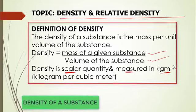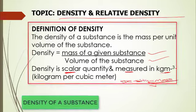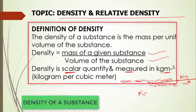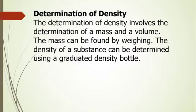The reason for this is that density is given by mass over volume. The SI unit of mass is kilograms, and the SI unit of volume is meter cube, giving us kilograms per meter cube.